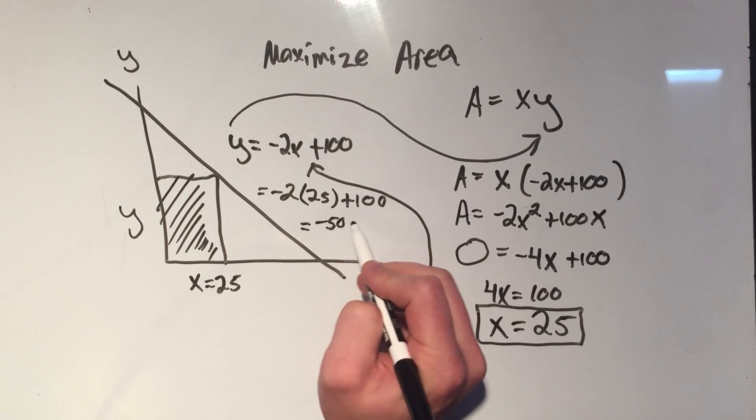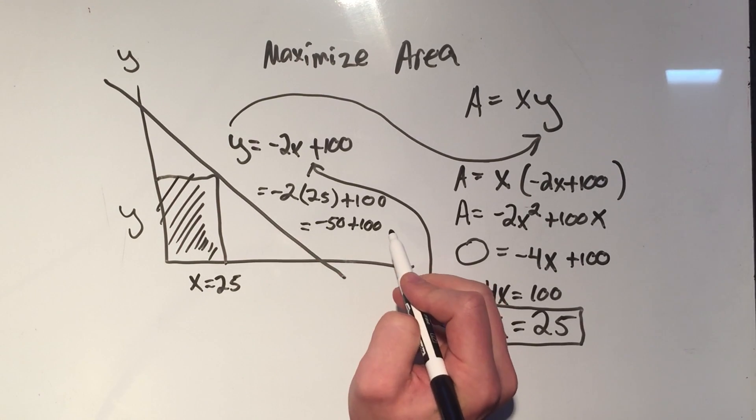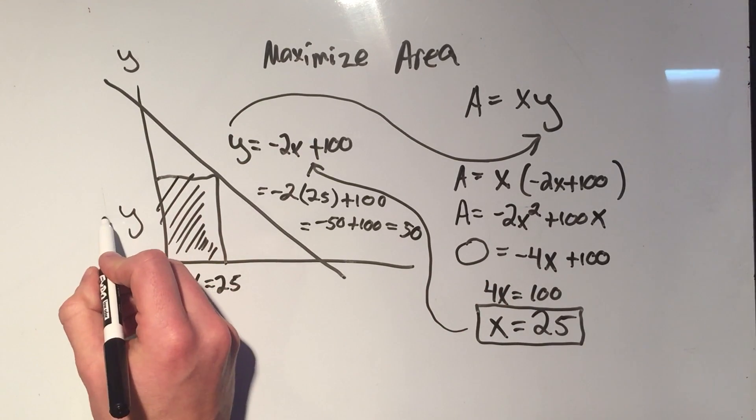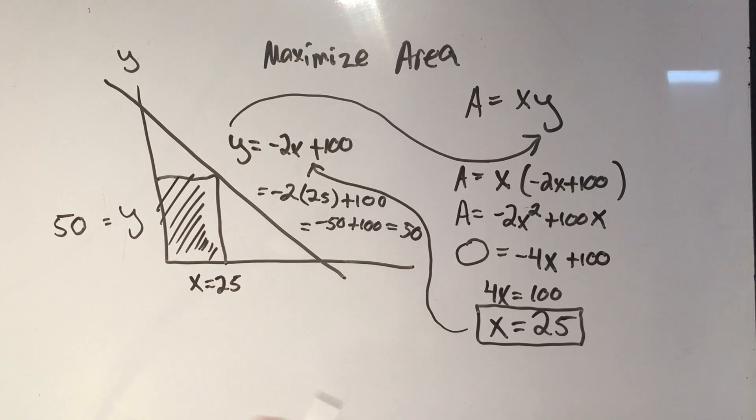And that's just a simplification. Minus 2 times 25 is minus 50 plus 100. Minus 50 plus 100 is 50. So I just found that y is 50.